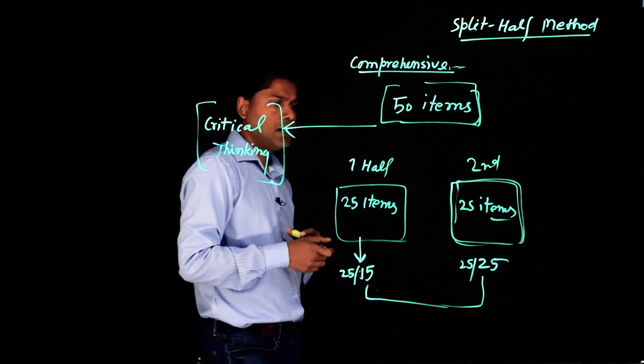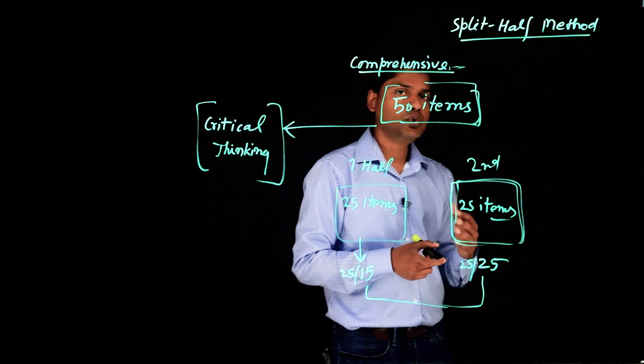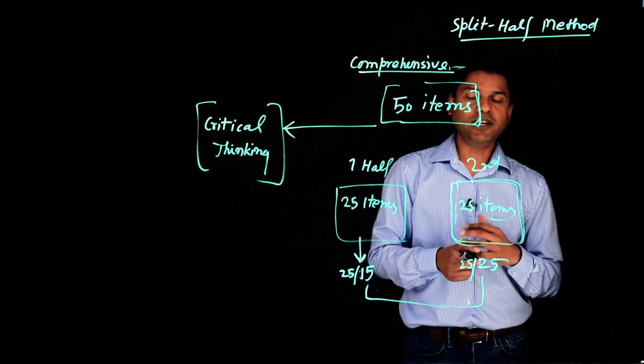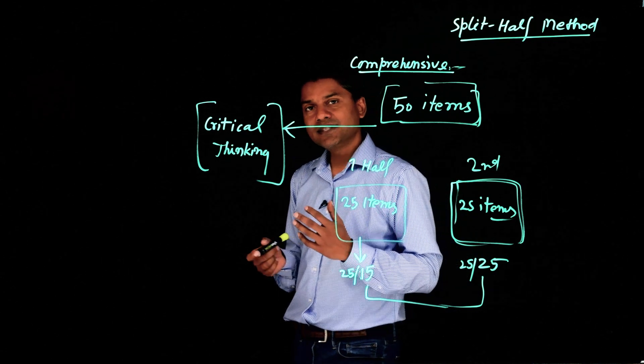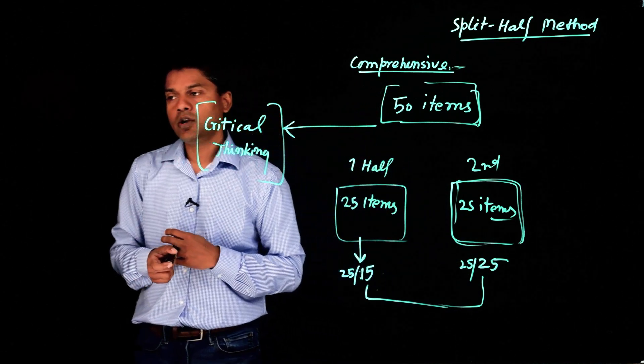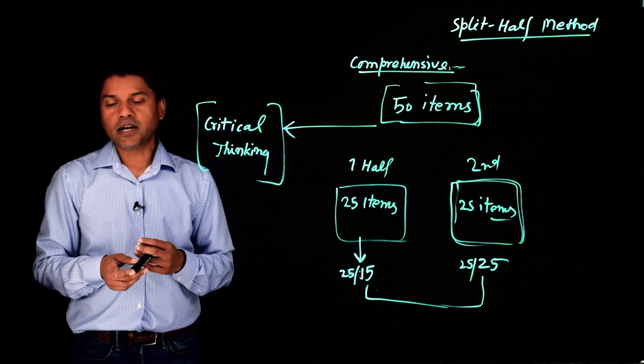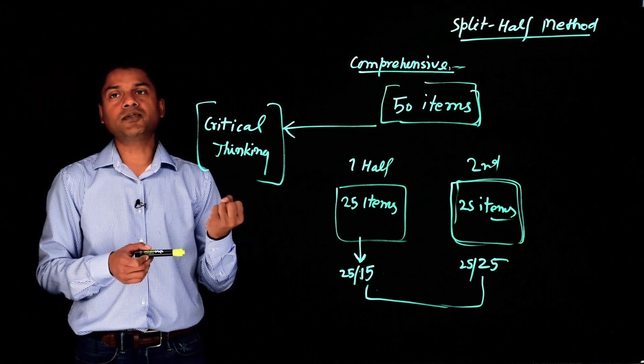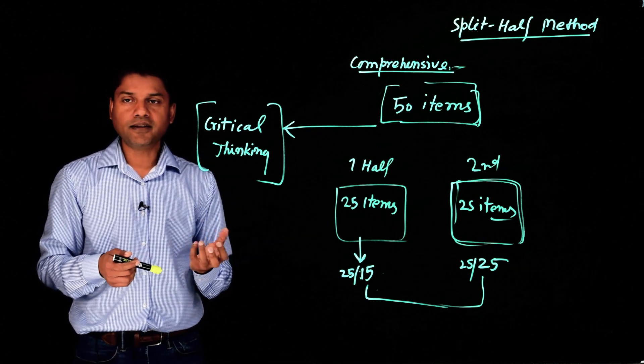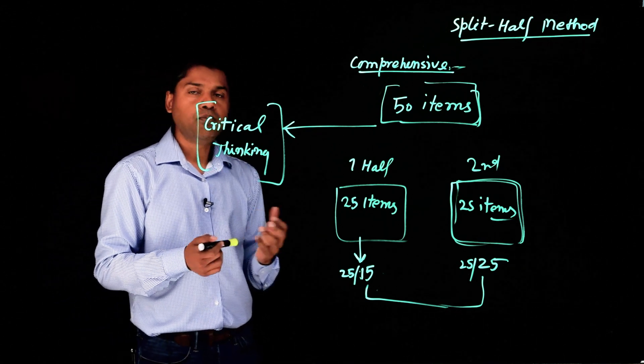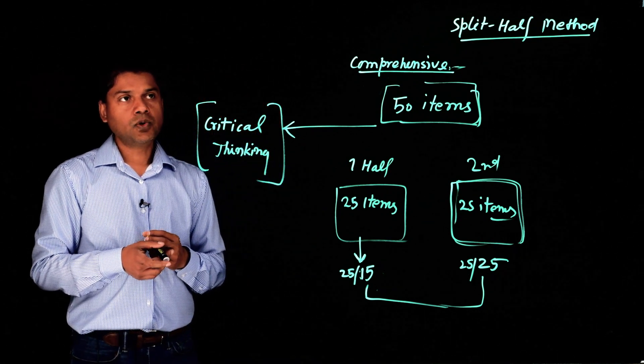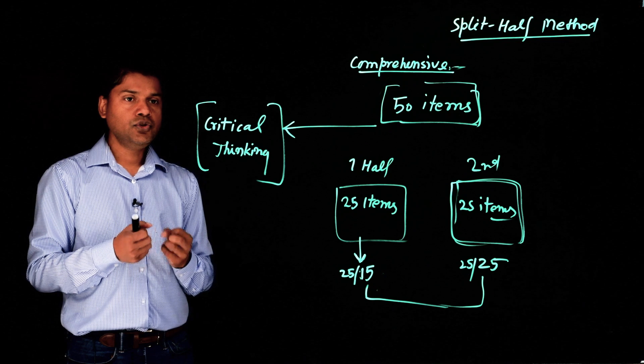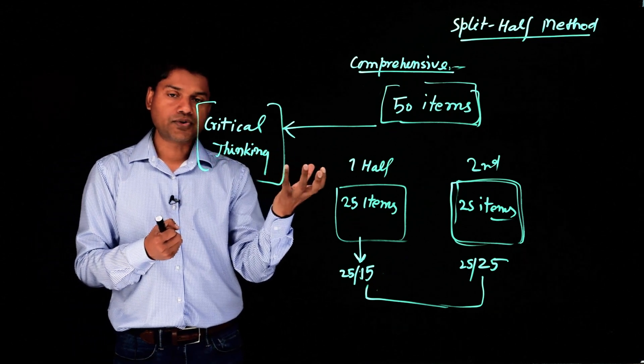In research, particularly in social science research and in quantitative research, we develop scales, standardized tests, or questionnaires to measure a social construct. Could be critical thinking. A very popular one is the intelligence test. So these tests are used to measure certain constructs.